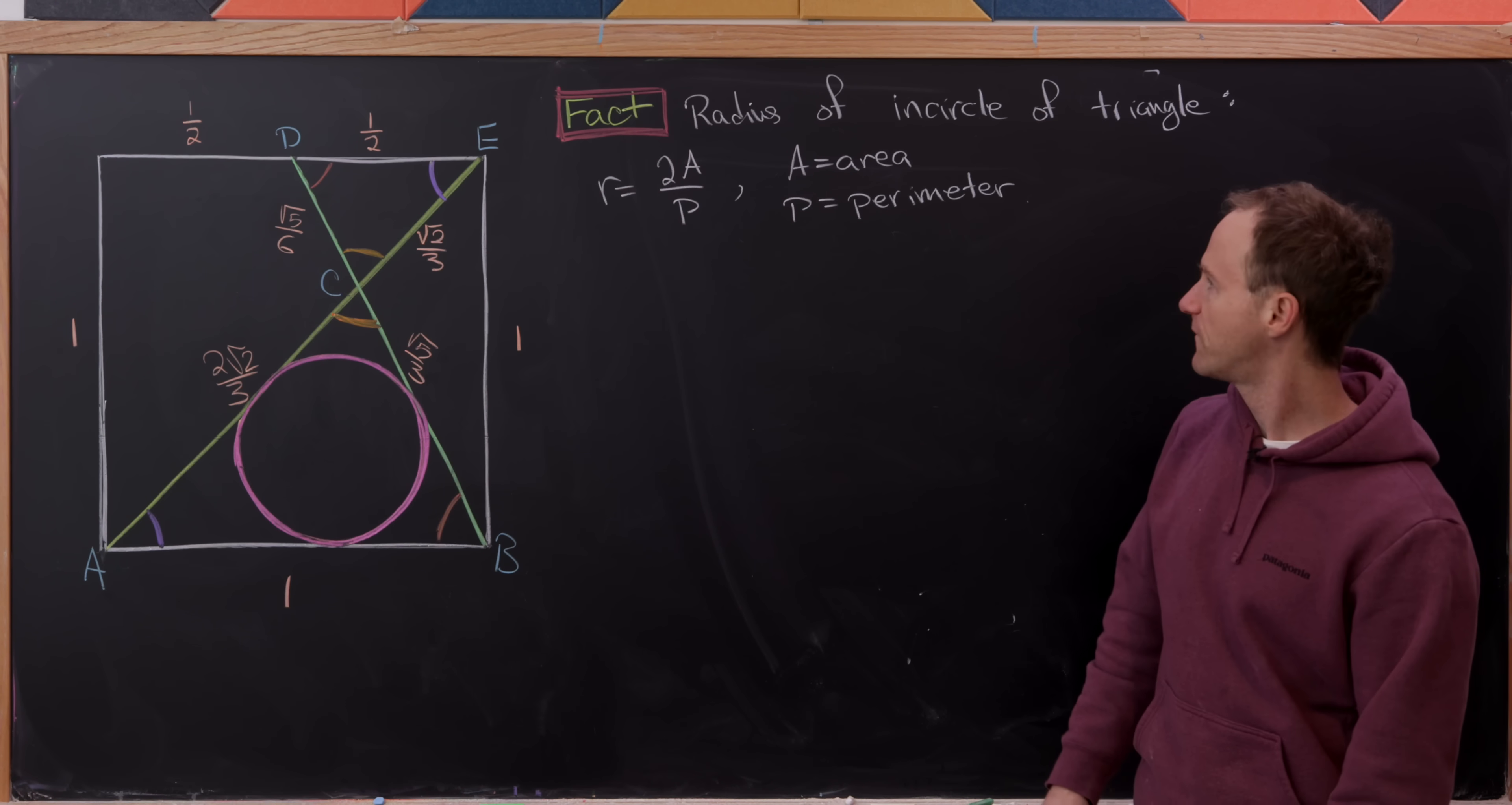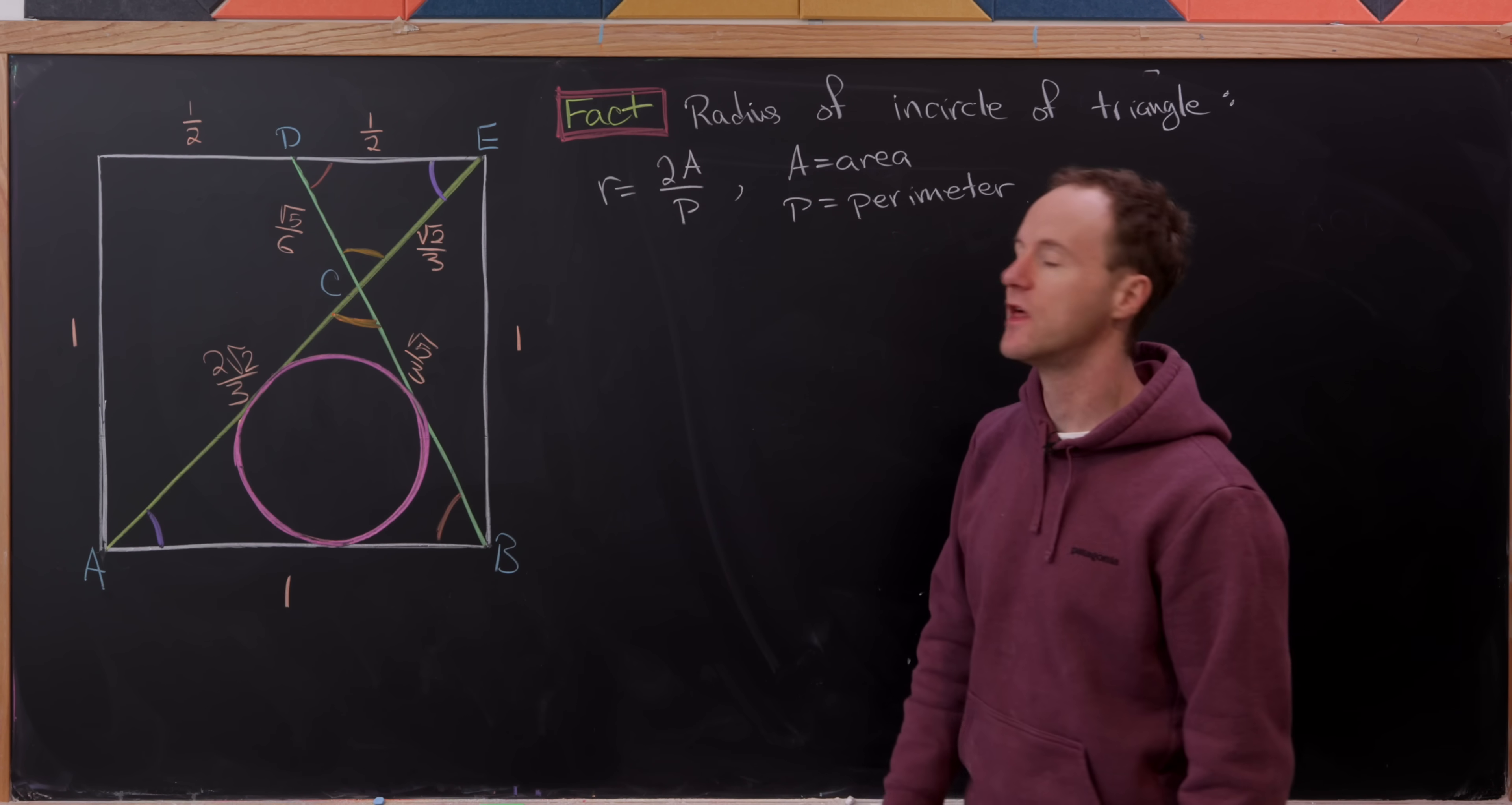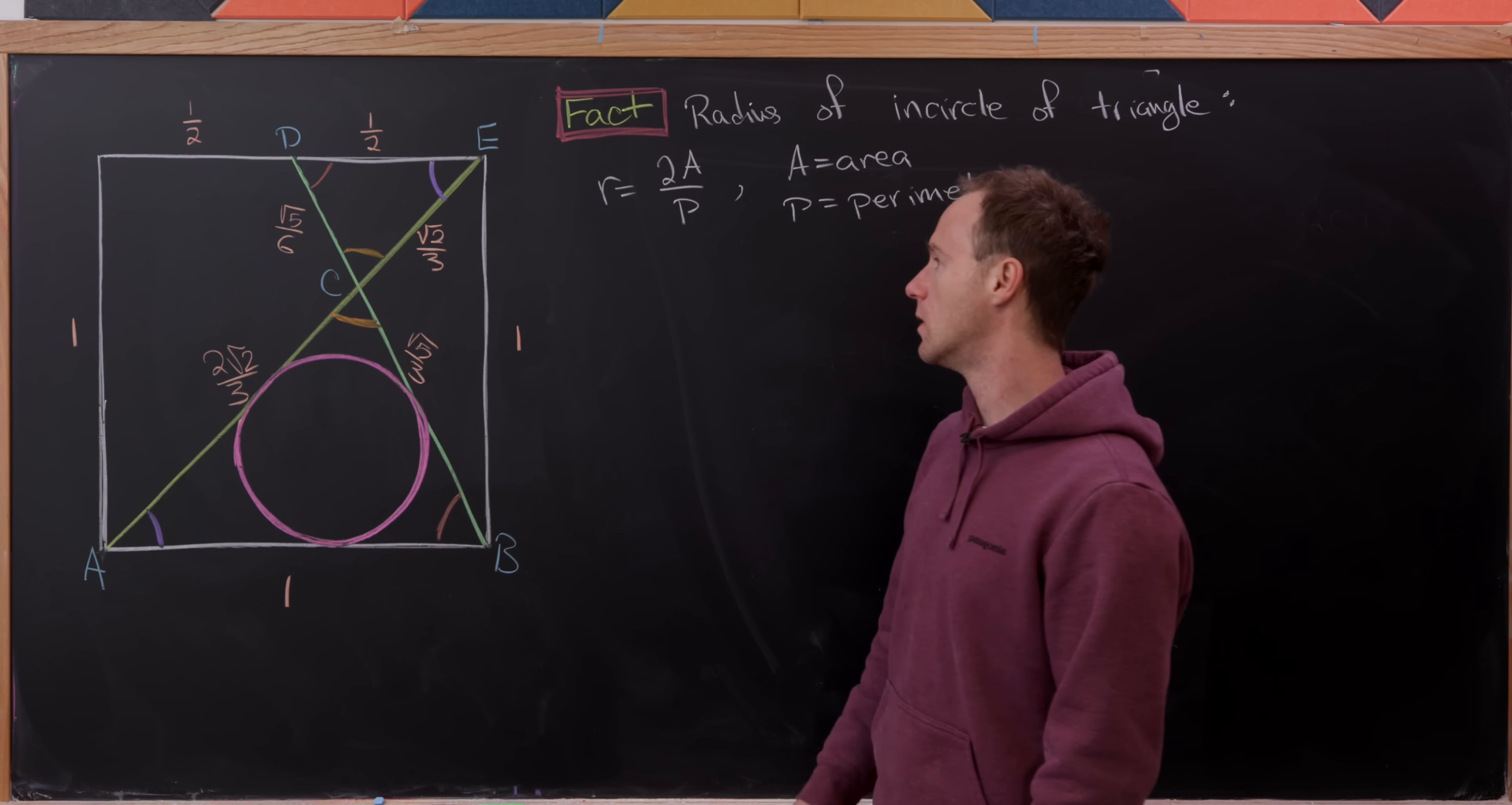So the way that we'll finish this off is with the following fact. And I think this fact is well known, so we won't derive it or anything. And that says that the radius of an incircle of a triangle is equal to 2 times the area over the perimeter. So, well, the incircle, what would I mean by that? Well, that is a circle, or maybe the unique circle that's inscribed inside of a triangle.